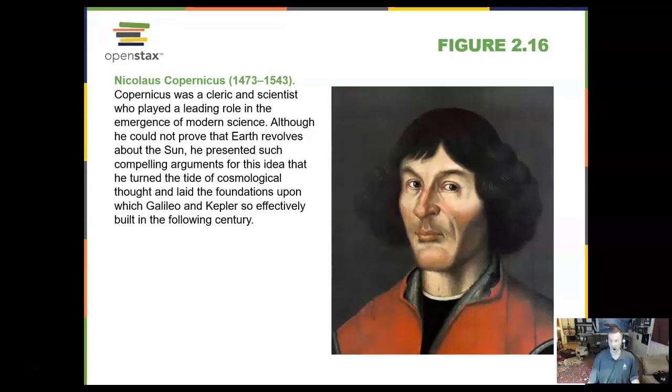Now, this gentleman is very important. Nicholas Copernicus, from 1473 to 1543. Copernicus was a scientist and a cleric who played a leading role in modern science coming out of Europe. He did not prove that the Earth revolved around the sun, but he presented compelling arguments for this idea. And it was the foundation for what later scientists, Galileo and Johann Kepler, came up with. Now, Copernicus was the first one to get away from that Ptolemaic system that said the Earth was at the center. That was true for 3,000 years. Really long time. And Copernicus said, I don't think so. I think the sun is at the center.